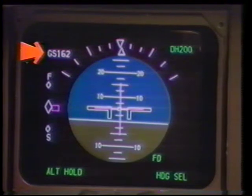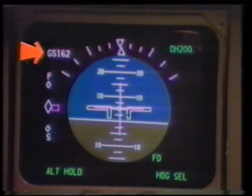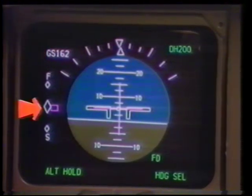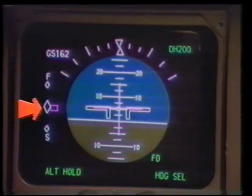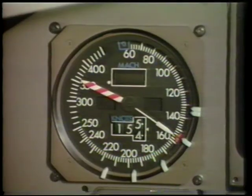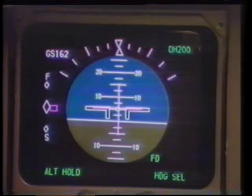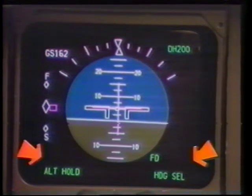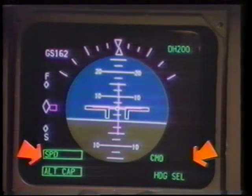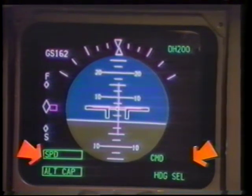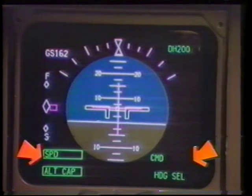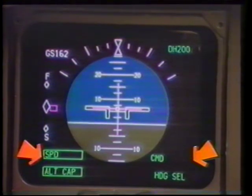Ground speed is presented for all ground and flight operations. Airspeed deviation is shown, normally referenced to the command airspeed bug. Autothrottle and autopilot flight director status, modes, and speed limits are shown in the lower corner annunciations.